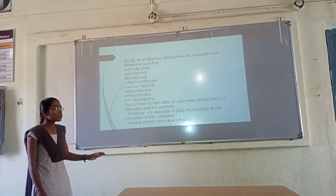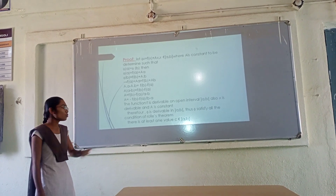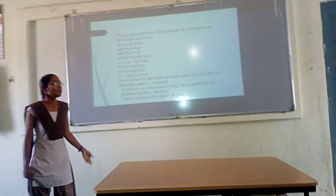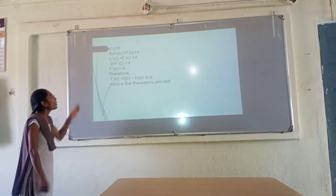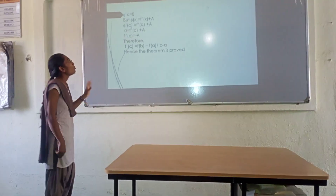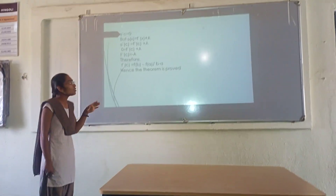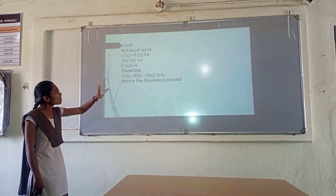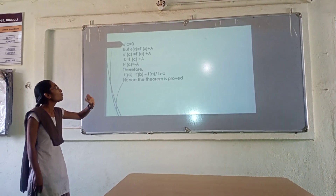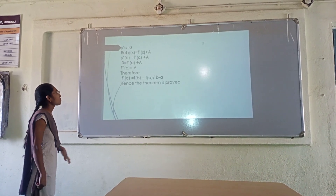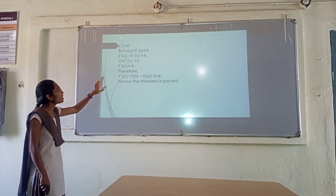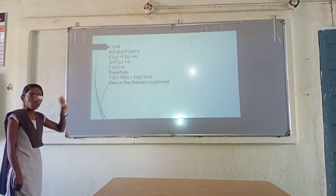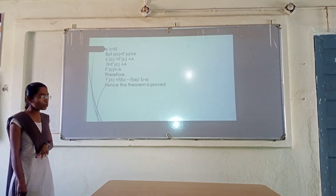There exists at least one value c belonging to the open interval (a, b) such that phi'(c) = 0. Now, differentiating phi(x) = f(x) + A·x, we get phi'(x) = f'(x) + A. Therefore, phi'(c) = f'(c) + A. Since phi'(c) = 0, we have 0 = f'(c) + A.